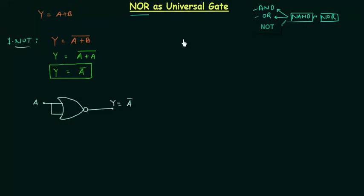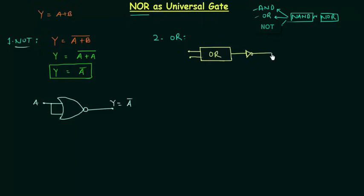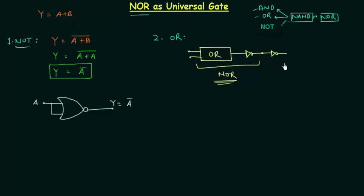Now we will implement the OR gate using the NOR gate. We obtain the NOR gate by complementing the output of the OR gate. If we have an OR gate and complement its output, that combination works as a NOR gate. So to get the OR gate back, we need to complement the output of the NOR gate again.